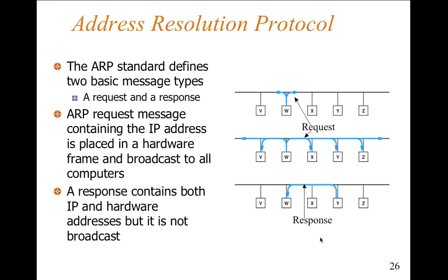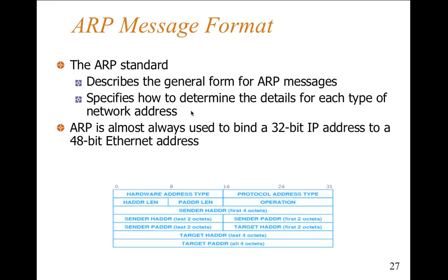In terms of the address resolution protocol — ARP — the ARP standard defines two basic message types: a request and a response. The request message contains the IP address and is broadcast to all computers on the network. A response contains both the IP and hardware address, but it is not broadcast — the response is only sent to the appropriate computer.